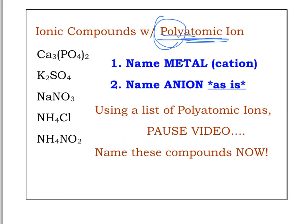To name compounds that have a polyatomic ion: if it starts with a metal, name the metal or cation first, then name the polyatomic anion as is — we do not change the name of a polyatomic ion. We will also see an example where the cation itself is a polyatomic ion. Whichever ion is polyatomic, we name it as is and do not change it to -IDE.